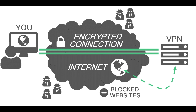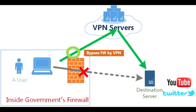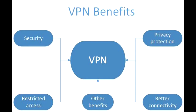This method allows subscribers to attain an IP address from any gateway city the VPN service provides. For instance, you may live in San Francisco, but with a VPN, you can appear to live in Amsterdam, New York, or any number of gateway cities.